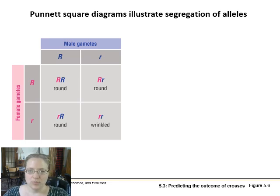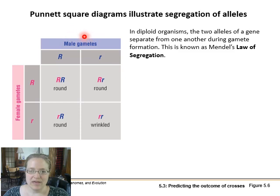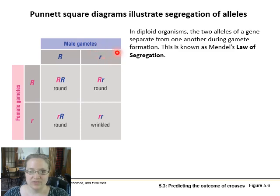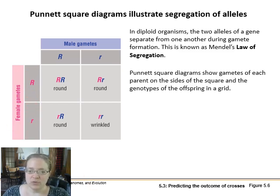The Punnett square is one of the ways we predict what the outcome of a cross will be. In diploid organisms, the two alleles of a gene separate from one another during gamete formation — that's our law of segregation. From the male parent in our F1 cross, the sperm can carry either the dominant R allele or the recessive little r allele, and the egg from the female can carry either allele as well. Punnett squares show what's coming from each parent and then fill in the grid to determine what the offspring are.